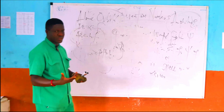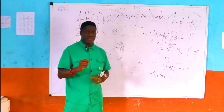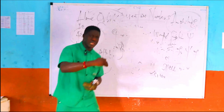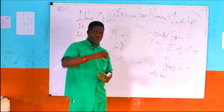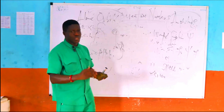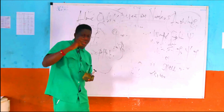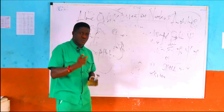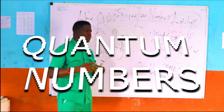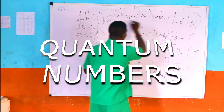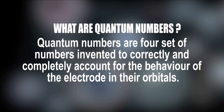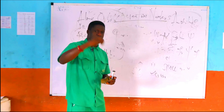Four sets of numbers were eventually invented principally to describe completely and correctly the behavior of the electrons in their atomic orbitals in the course of their transition from one atomic orbital to another. These four sets of numbers, which today account correctly and completely for the electrons in the atomic orbital, is what we today call quantum numbers. So if you are asked, what are quantum numbers? Quantum numbers are simply four sets of numbers invented to correctly and completely account for the behavior of the electrons in their atomic orbital.